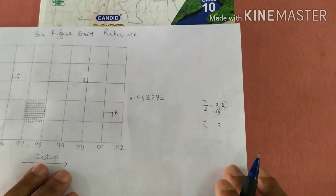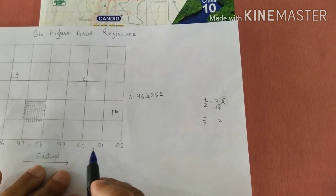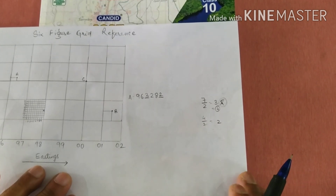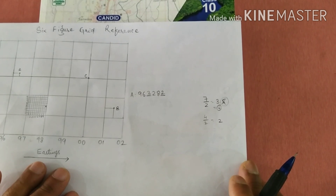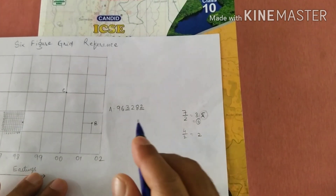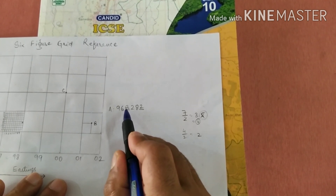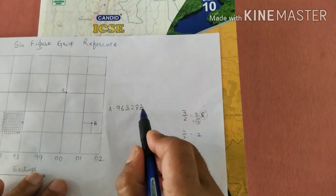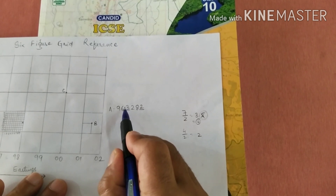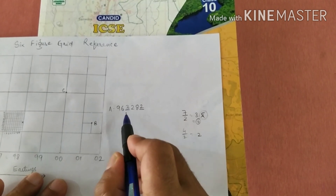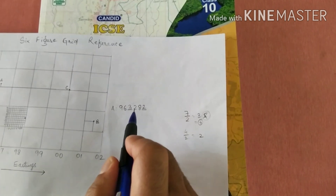Remember that for the four-figure grid reference, even if a single digit is like zero-zero, zero-one, or zero-two, you have to write it as mentioned on the top of the sheet. But when you write the third digit and the sixth digit, do not add a zero before them — otherwise it will become an eight-figure digit. So directly write three, or whatever the single digit is.